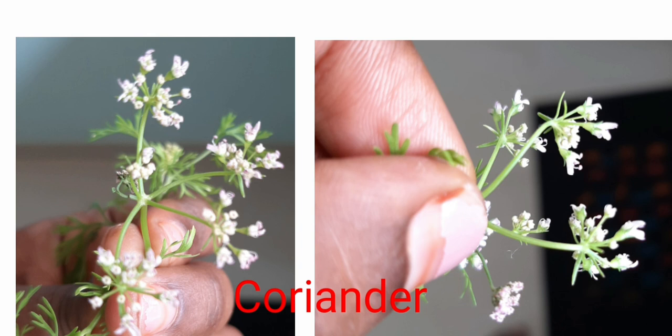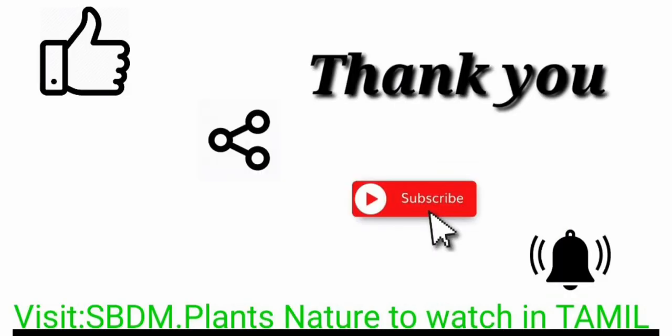So this is about the main axis shortened racimose inflorescence — corymb and umbel. Thank you so much for watching.